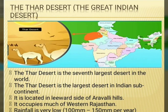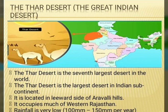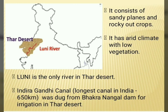The Thar Desert is the seventh largest desert in the world and the largest desert in the Indian subcontinent. It is located in the leeward side of Aravalli Hills and occupies much of western Rajasthan. It receives little rainfall, ranging from 100 to 150 millimeters per year. It consists of sandy plains and rocky outcrops with arid climate and low vegetation. Luni is the only river in Thar Desert. Indira Gandhi Canal was dug from Bhakra Nangal Dam for irrigation in Thar Desert and is the longest canal in India, about 650 kilometers.